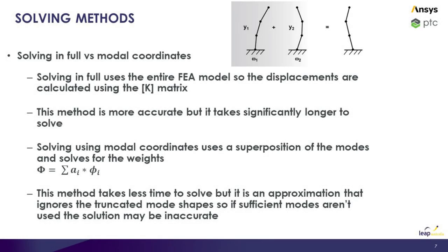Now that we've run the modal analysis, we can discuss solving in full versus solving in modal coordinates. Solving in full utilizes the entire FEA model, so the displacements are calculated using the stiffness matrix — this method is typically more accurate but takes longer to solve. Solving using the modal solution uses a superposition of the mode shapes. This method takes less time but is an approximation that ignores truncated mode shapes, so if insufficient mode shapes are used the solution will be inaccurate. Going forward we will be solving using modal coordinates.